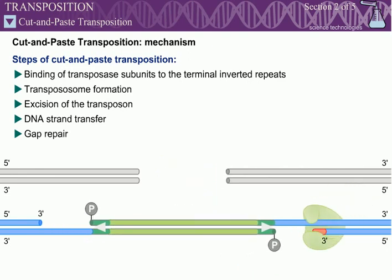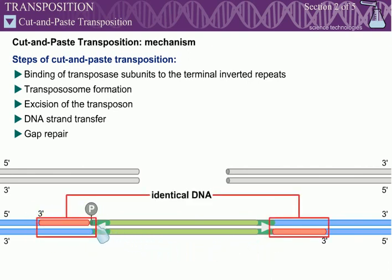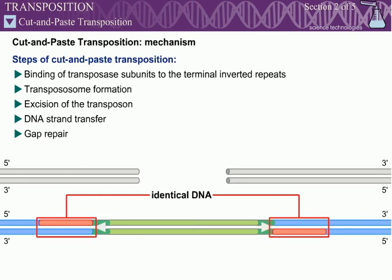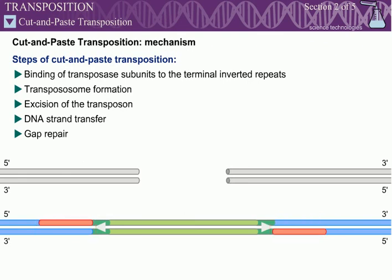The 3' hydroxyls of the target strands serve as primers for DNA replication. Filling in these gaps gives rise to DNA duplications that flank the transposons. These sequences are called target site duplications. The double-stranded breaks at the initial site of the transposon must also be repaired. These breaks can be repaired by homologous recombination or joined directly by the non-homologous end-joining pathway.